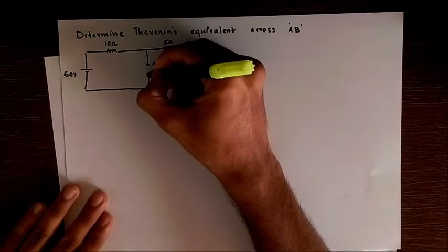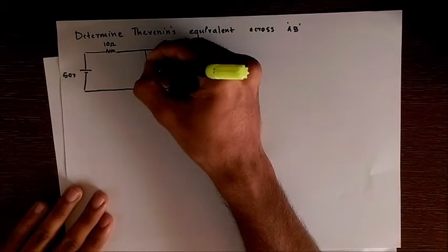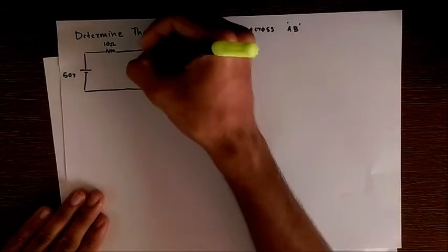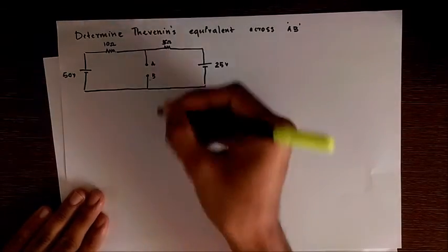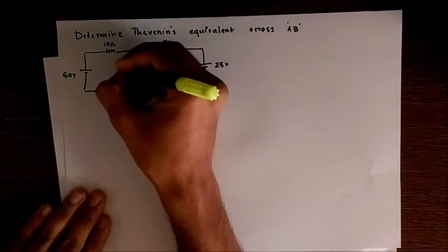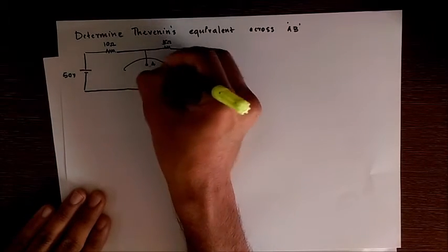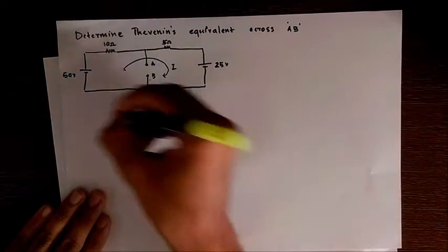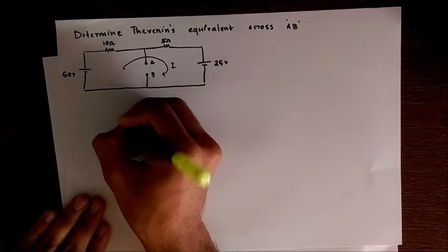So first we have to find out the voltage across the terminals A and B. So here I am applying the mesh analysis. Let there be a current I and writing the mesh equations.